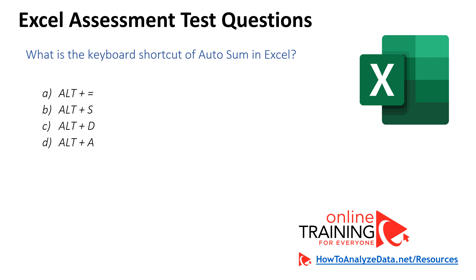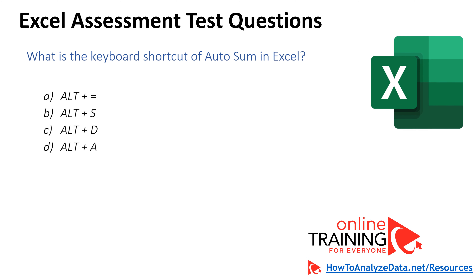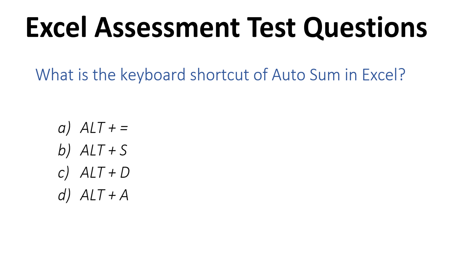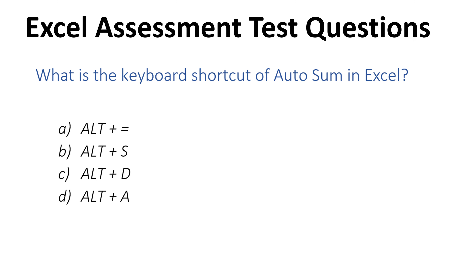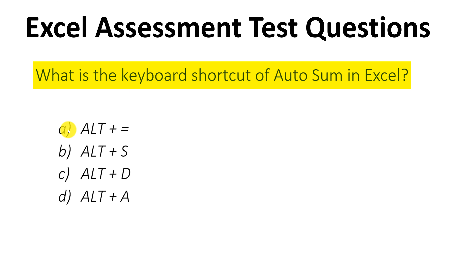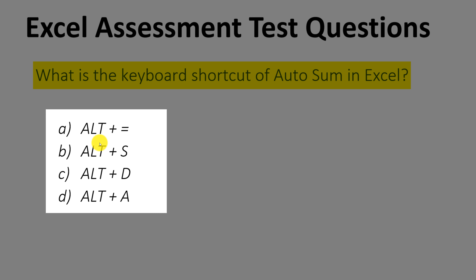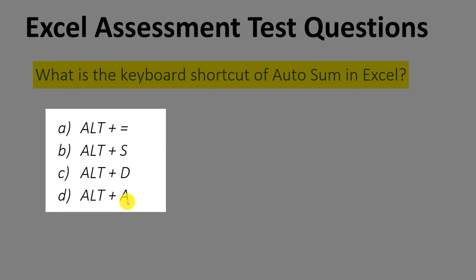A lot of times during an Excel assessment test, you will be tested on your knowledge of Excel keyboard shortcuts. In this particular question, you're being asked what is the keyboard shortcut for AutoSum in Excel, and you are presented with four different choices: Alt-Equal, Alt-S, Alt-D, and Alt-A. What do you think is the right answer?